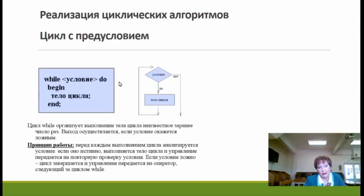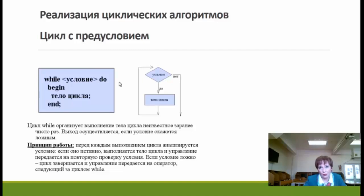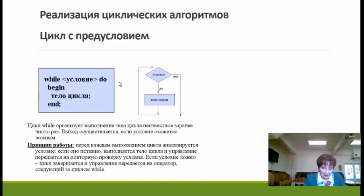В задании 19 также используется цикл WHILE — цикл с предусловием, или цикл «пока». После ключевого слова WHILE указывается условие: цикл выполняется до тех пор, пока это условие имеет значение TRUE. Как только условие принимает значение FALSE, цикл завершается. Обычно переменная, входящая в условие, изменяется внутри тела цикла — иначе получится бесконечный цикл.